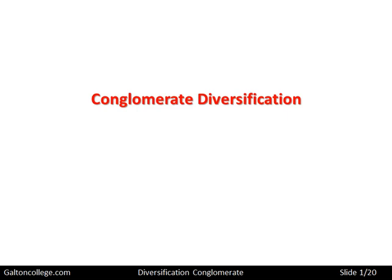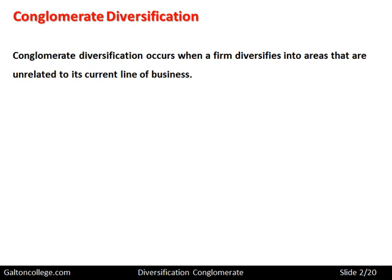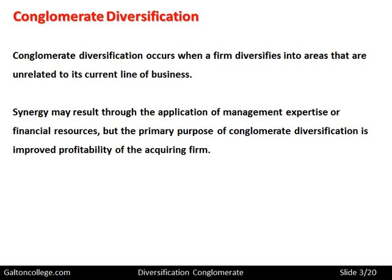In this class we want to talk about conglomerate diversification. Conglomerate diversification occurs when a firm diversifies into areas that are unrelated to its current line of business — totally different activities perhaps.